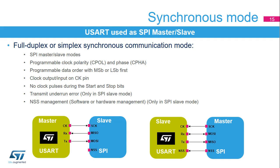Unlike the UART, the USART can also communicate synchronously. It can operate as an SPI in master or slave mode with programmable clock polarity (CPOL) and phase (CPHA), and programmable data order with MSB or LSB first. The clock is output in master mode or input in slave mode on the CK pin. No clock pulses are provided during the start and stop bit. When the USART is configured in SPI slave mode, it supports transmit underrun error and NSS hardware or software management.